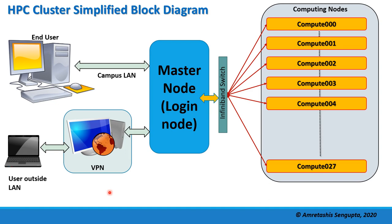It is a very simplified diagram. Basically, in a campus we have end users — students, faculties, research scholars — a lot of people who can use the HPC. They can either be connected to the campus line when they are in the campus or hostels, or if they are working from home they will be in an external internet service provider network. You can directly connect to the master node, in some cases called the login node, through the campus line or through a VPN tunnel.